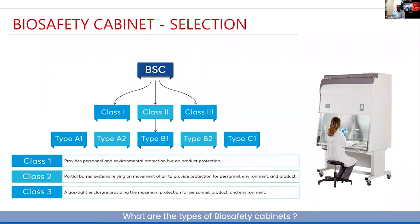Class 2 is a partial barrier system dependent on the movement of air from inside the cabinet. There are different classifications within Class 2 which we'll cover, but it has the capability of protecting the person, the environment, and the product.